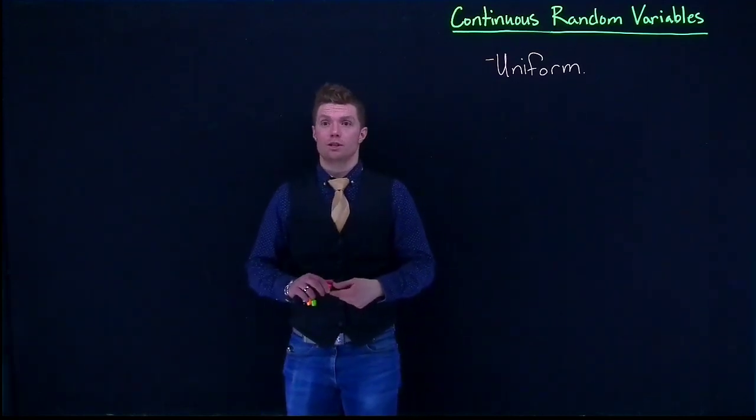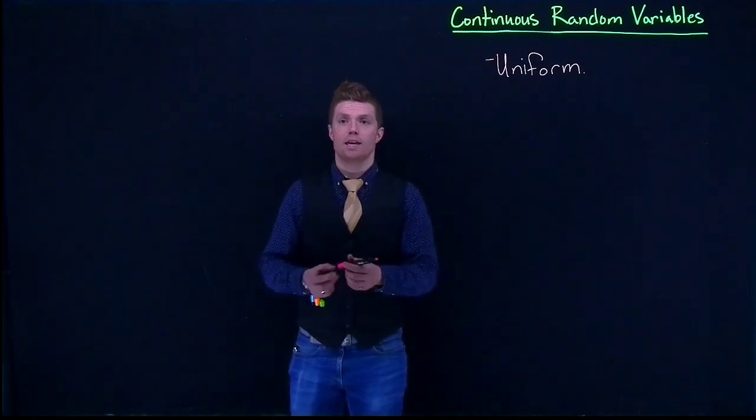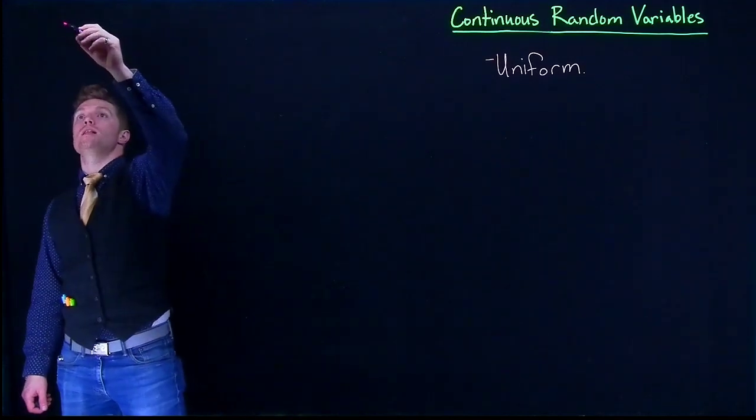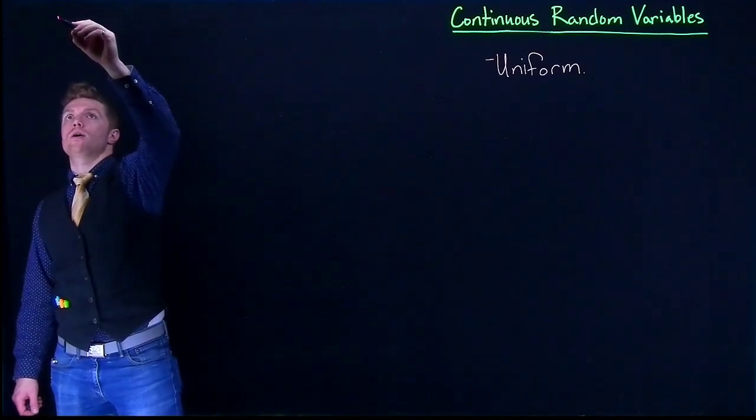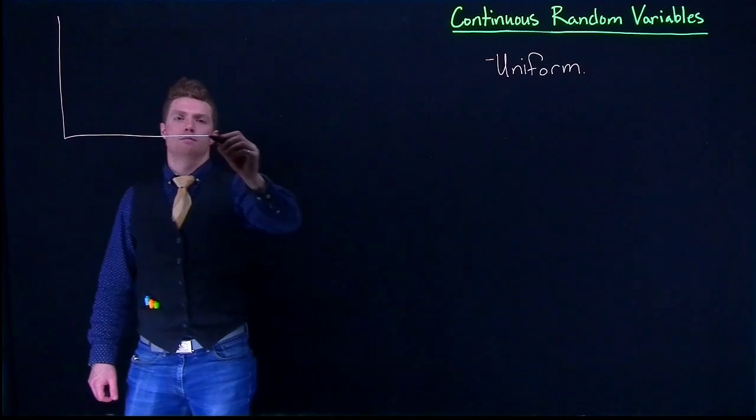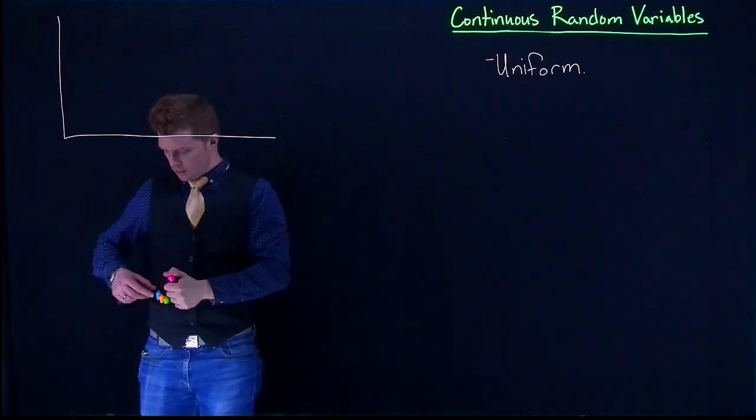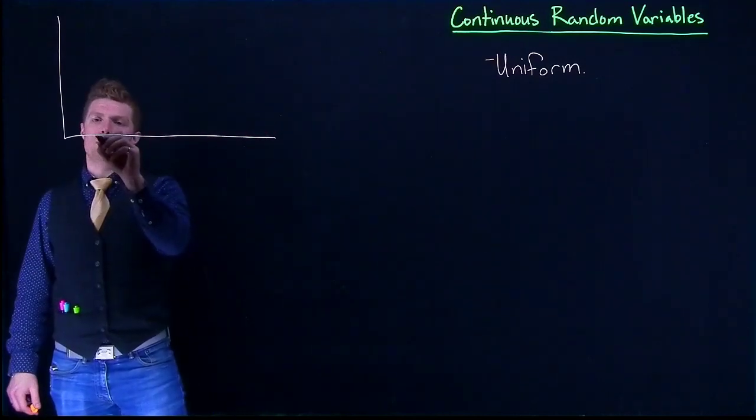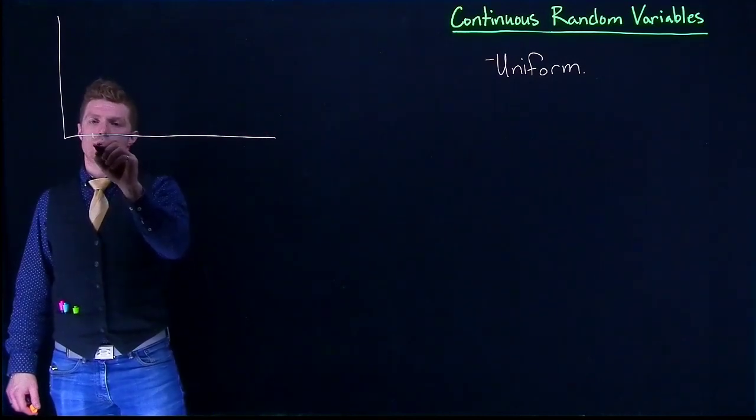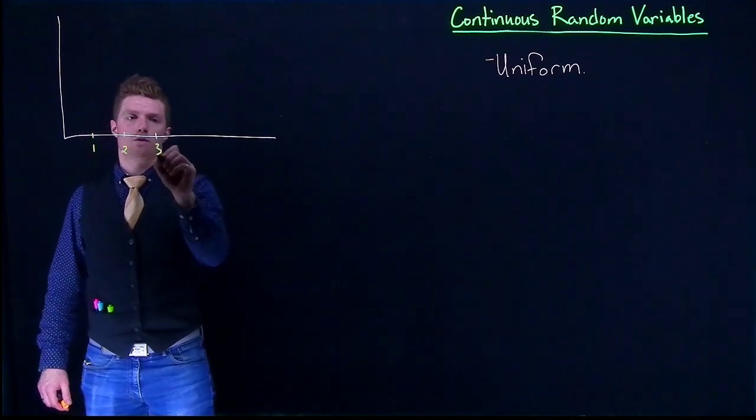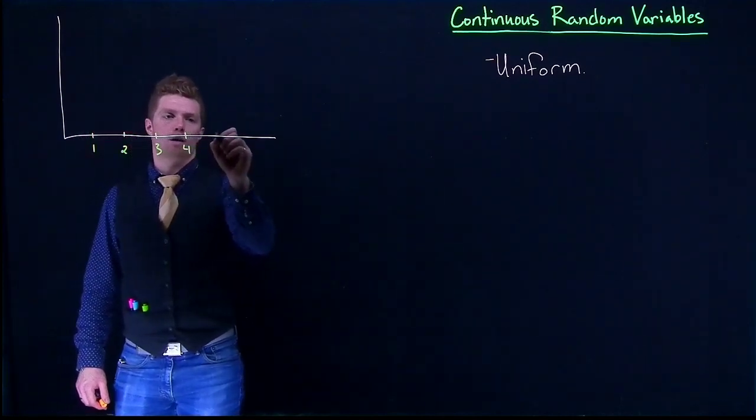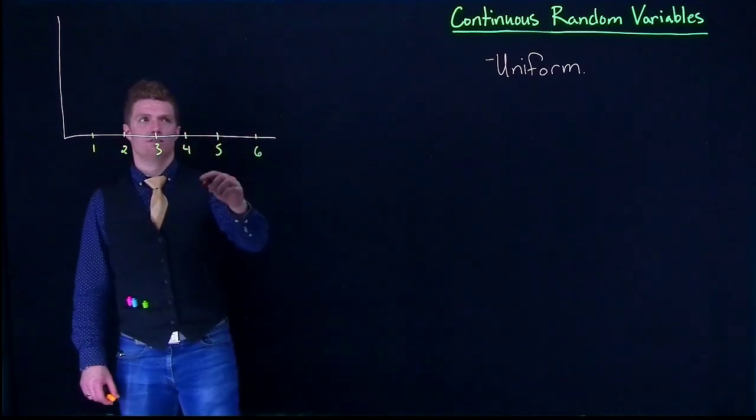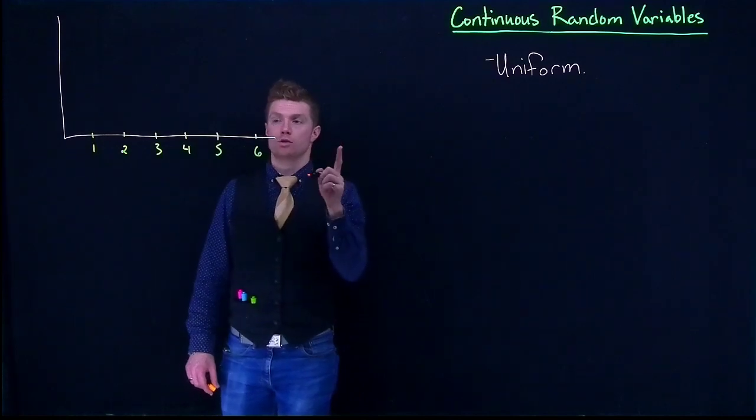The first thing that we should do is figure out how do we calculate the probability density function. So let's go back to our graph and continue using that DMV example. Number of hours that you could possibly wait at the DMV, we could wait 1, 2, 3, 4, 5, and 6. So we've got our minimum and our maximum. Those are going to be important.